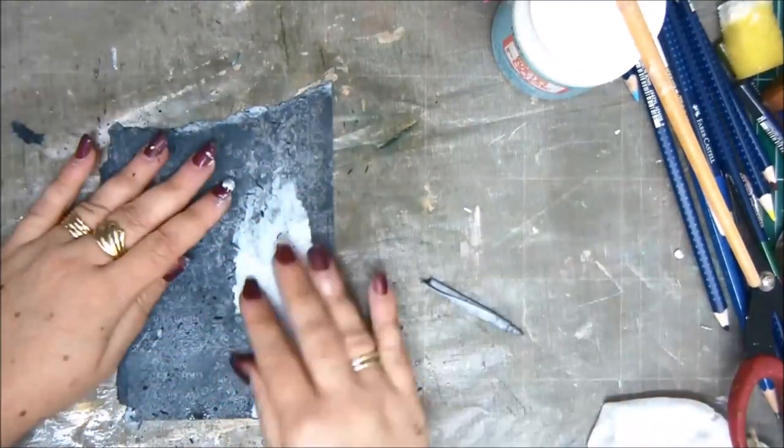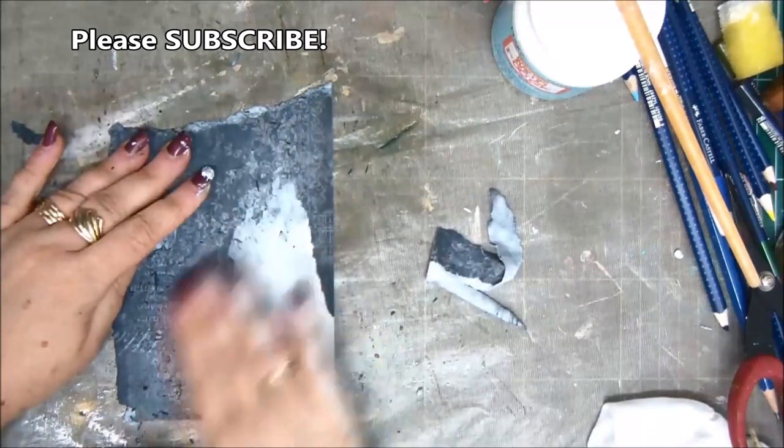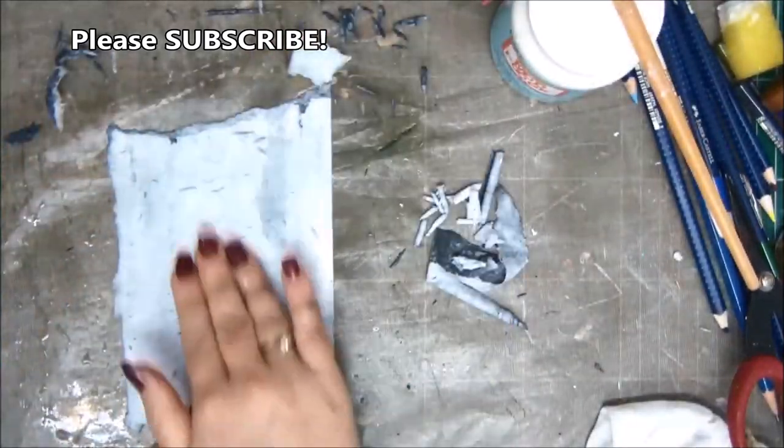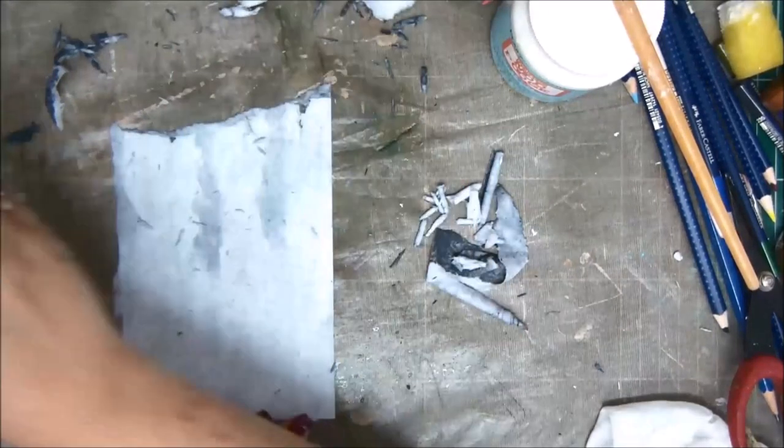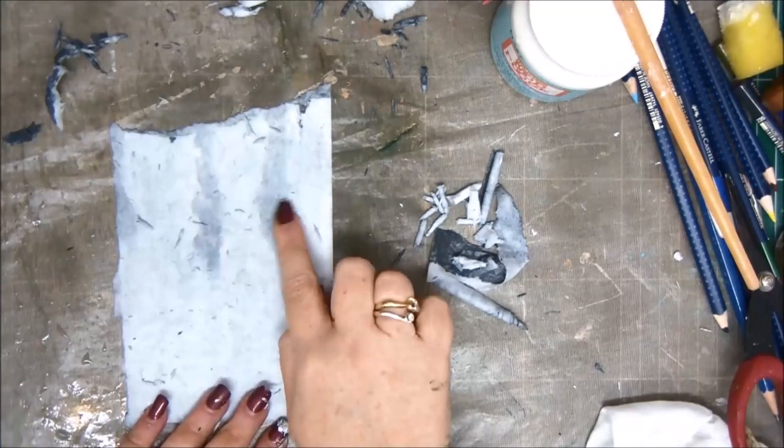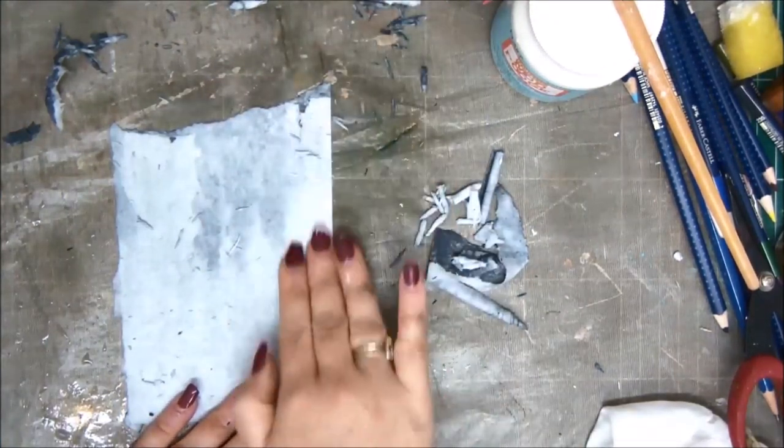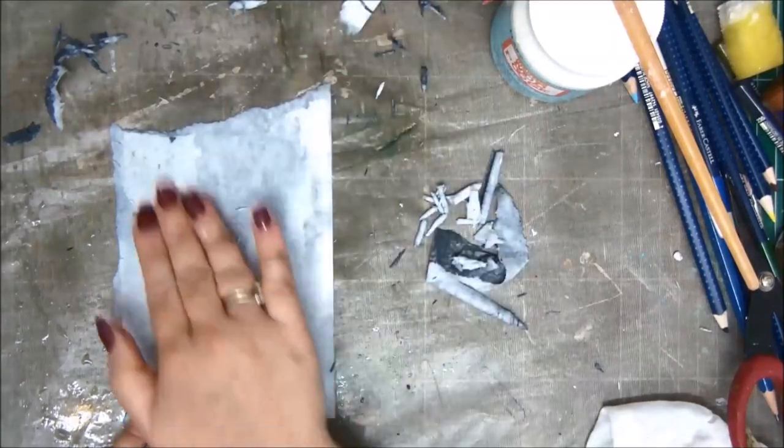The top layer of the cardstock simply removes itself from the paper. So basically what you're creating is a very thin paper instead of a cardstock which is very thick. You want to create a very thin paper almost like tissue paper.